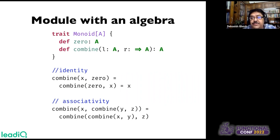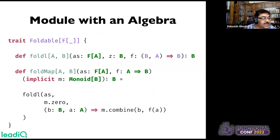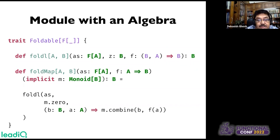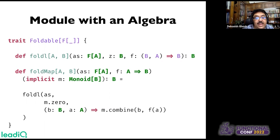Keep in mind the algebra of the module — we haven't yet talked about the implementation of any specific monoid for a specific data type. Here's an example of how we can use algebraic thinking to implement a combinator by reusing an existing algebra. We use the algebra of foldLeft and monoid to implement foldMap. This is the complete implementation of foldMap — derived just by using the existing algebras of fold and monoid, without caring about the implementation of foldLeft or the specific type of monoid.